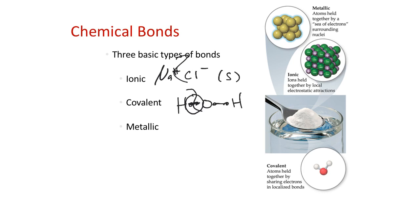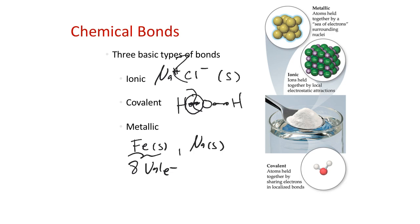Metallic bonding is actually very strong bonding, present in metals like solid iron and solid sodium. Iron has eight valence electrons and a high positive charge for the nuclei. You can think of these positively charged nuclei with electrons that act almost as a sea of electrons surrounding them.